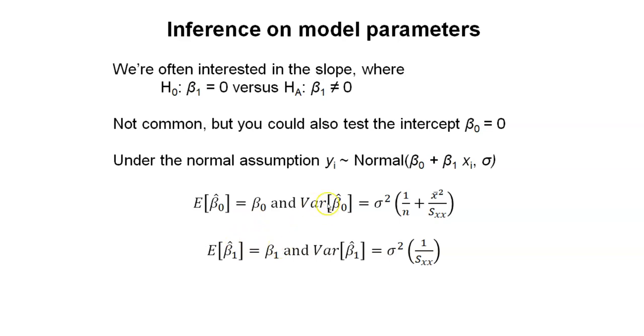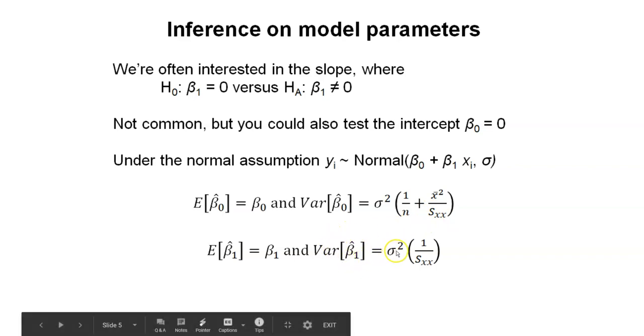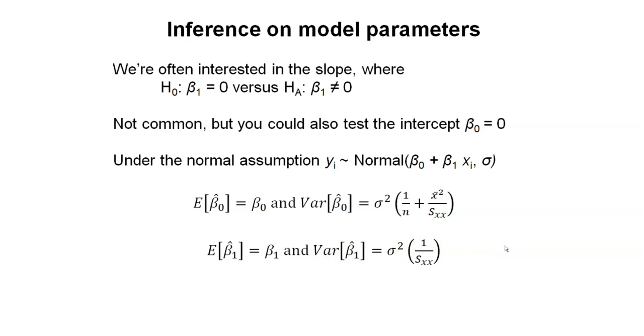But the variances might be different. The variance for beta 0 hat would be sigma squared, and then multiplied by 1 over n plus x bar squared divided by s sub xx. And remember s sub xx were some values we could calculate previously. The variance of beta 1 hat is going to equal sigma squared times 1 over s sub xx. So again, if we wanted to calculate these values manually, we could do those that will set up our hypothesis test.